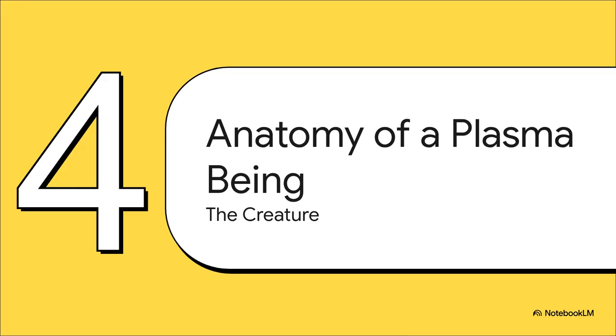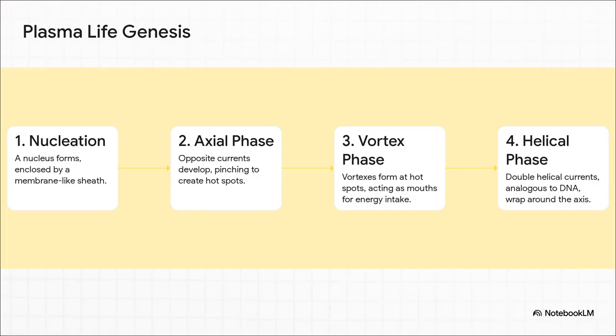So let's move on to section four: the creature, anatomy of a plasma being. This is where it gets really interesting. You take the dark plasma environment, you add in this principle of self-organization, and the paper starts to build a detailed, theoretical model of what one of these dark life forms could actually look like. It's almost like a kind of theoretical embryology for a plasma creature.